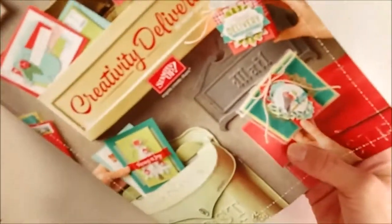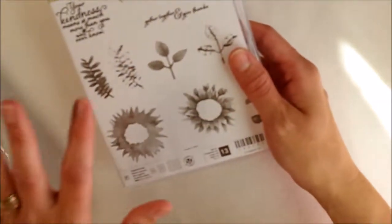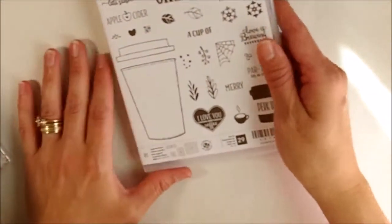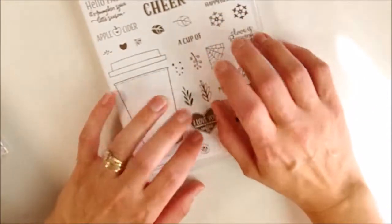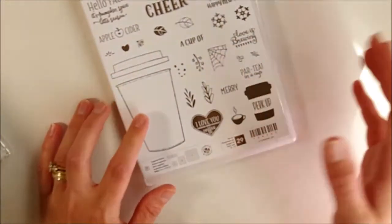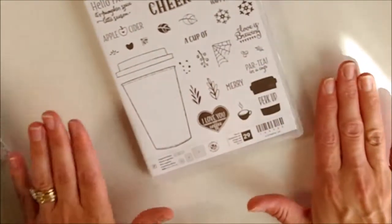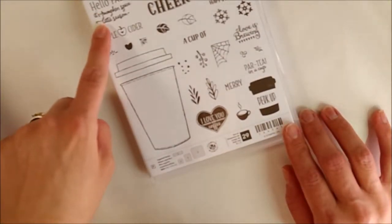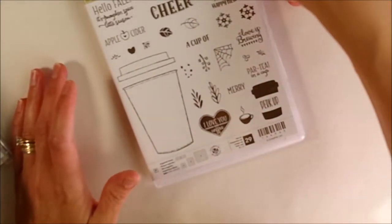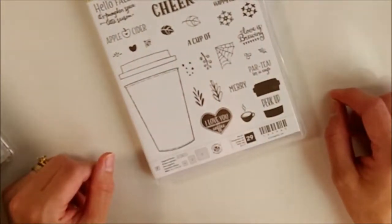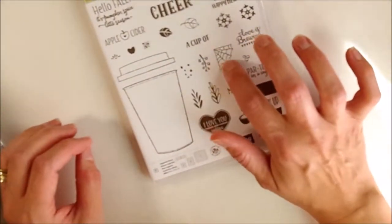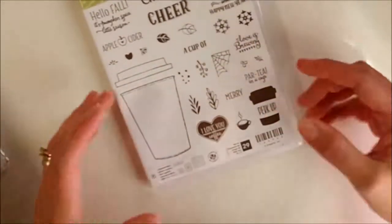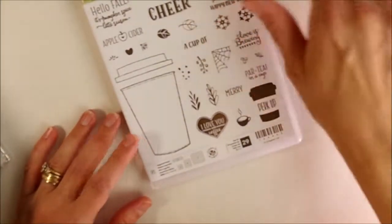The first stamp set I got is Merry Cafe. It's really neat because it goes along with the Coffee Cafe stamp set and dies from the annual catalog. I love features like the apple cider and hello fall, it's pumpkin spice latte season. The Halloween stuff I might not use since I'm not a Halloween kind of person.